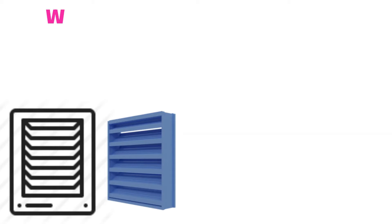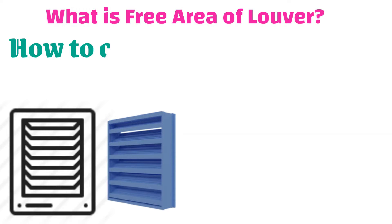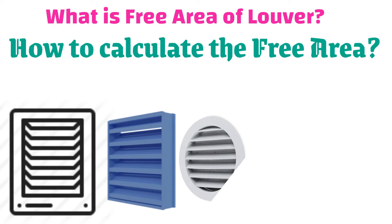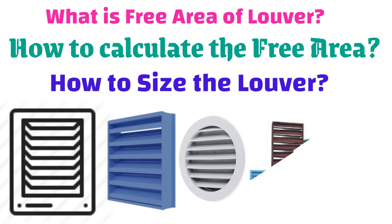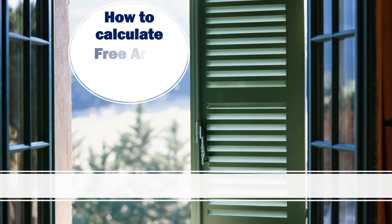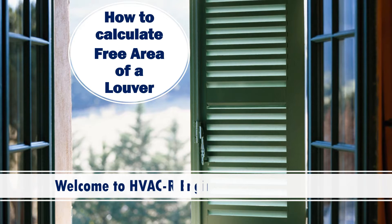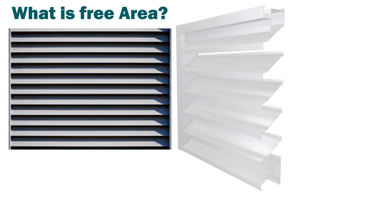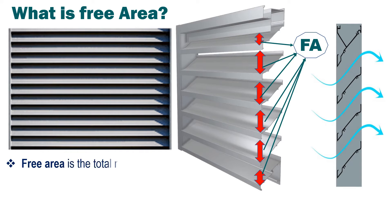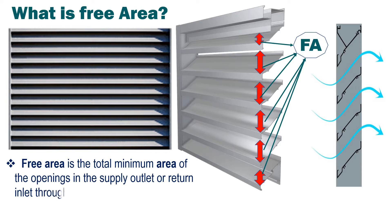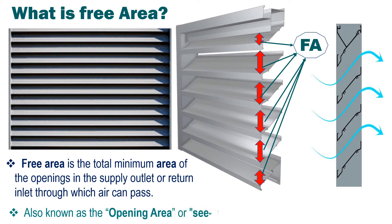Hi friends, welcome to HVACR Engineers. In the previous video we understood about face area, free area, core area, and effective area of a louver. This video is to understand how to calculate the free area of a louver and how to size the louver. First, we need to understand what free area is. Free area is the total minimum area of the openings in the supply outlet or return inlet through which air can pass. It is also known as the opening area or see-through area of a louver.